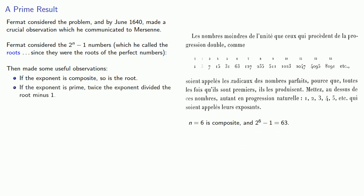Next, if the exponent is prime, then twice the exponent divides the root minus 1. For example, n equals 7 is prime, and the corresponding root 127 minus 1, that's 126, is divisible by 2 times 7, which is 14.